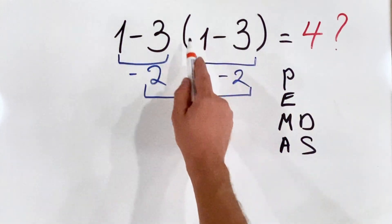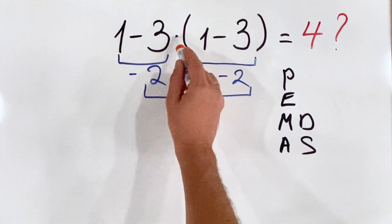So parenthesis must be done first, then we need to do the multiplication.